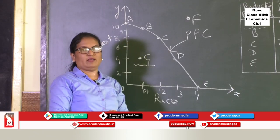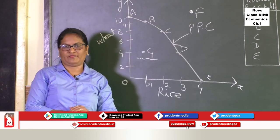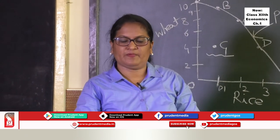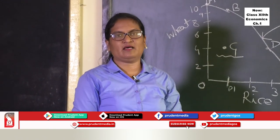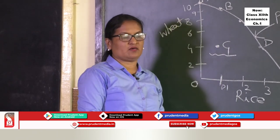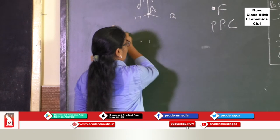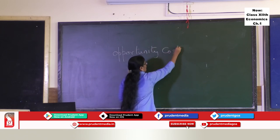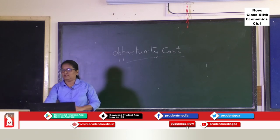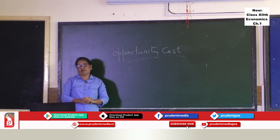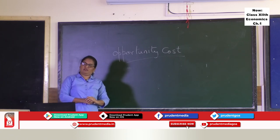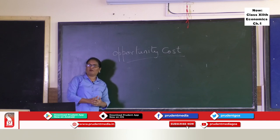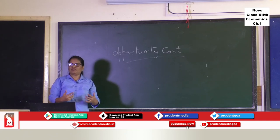Students, this is your important subtopic — the production possibility frontier, also known as the transformation curve or transformation line. Now we take up the last subtopic of this chapter: opportunity cost. Opportunity cost is also known as economic cost. It refers to the next best alternative — the next best option — which we have sacrificed.